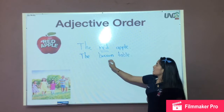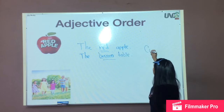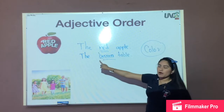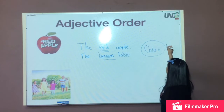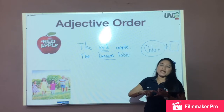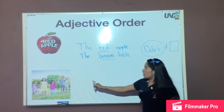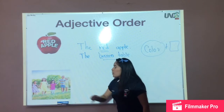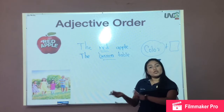In this form: color first. We are going to write the color and then the object — apple, table, chair, classroom. Now, we are going to talk about numbers.